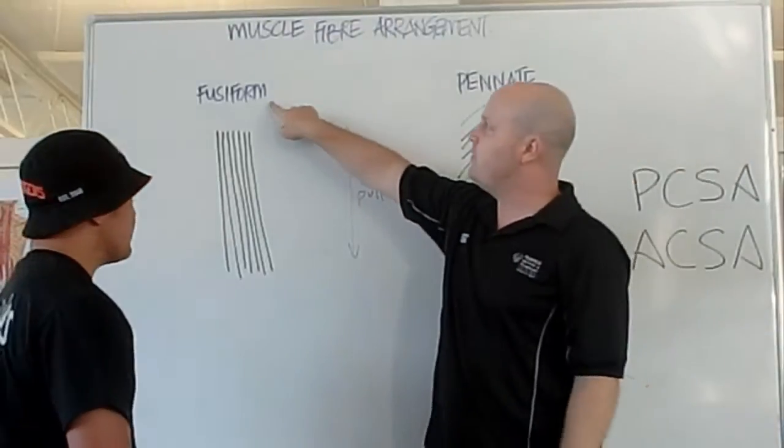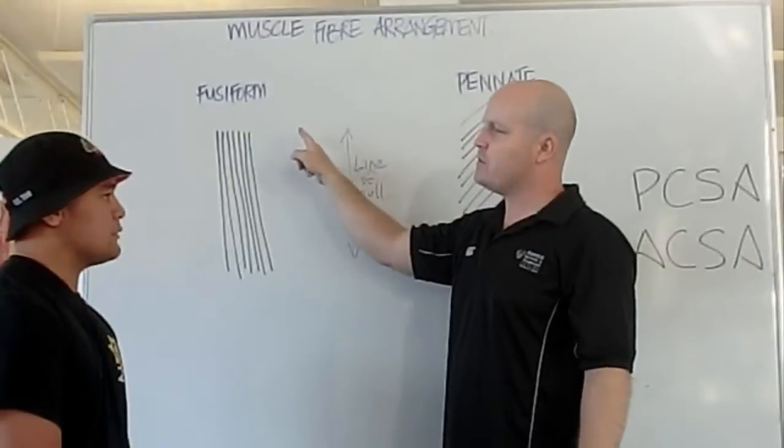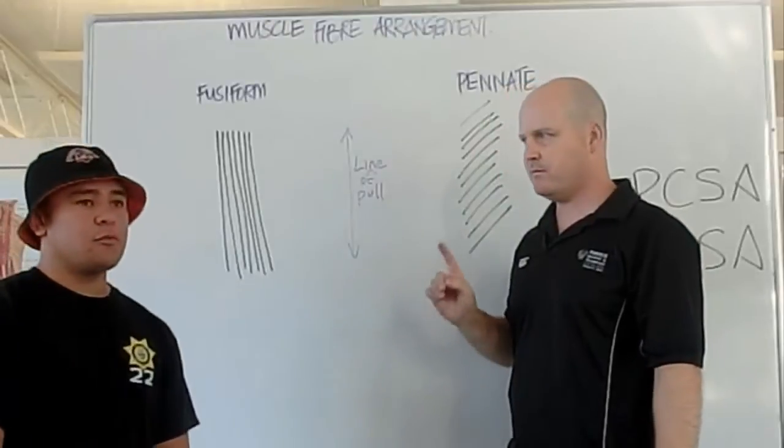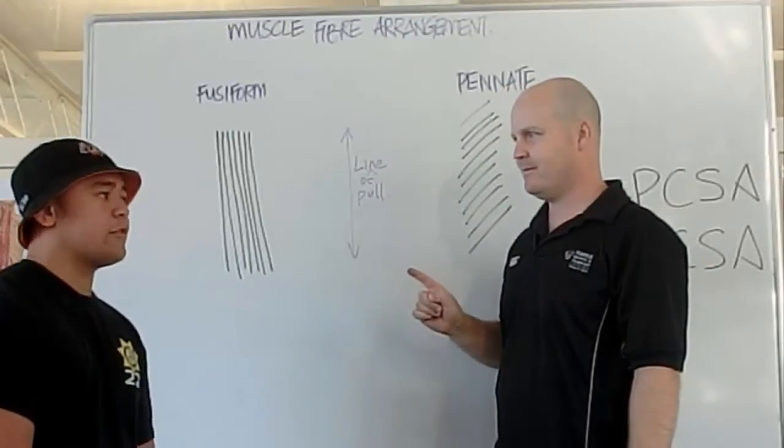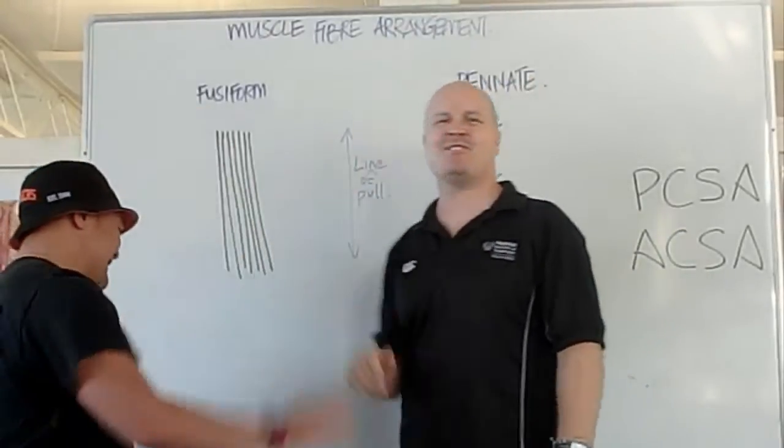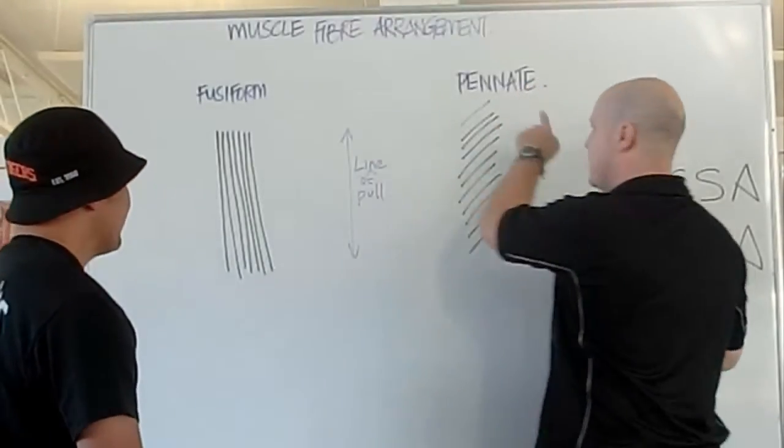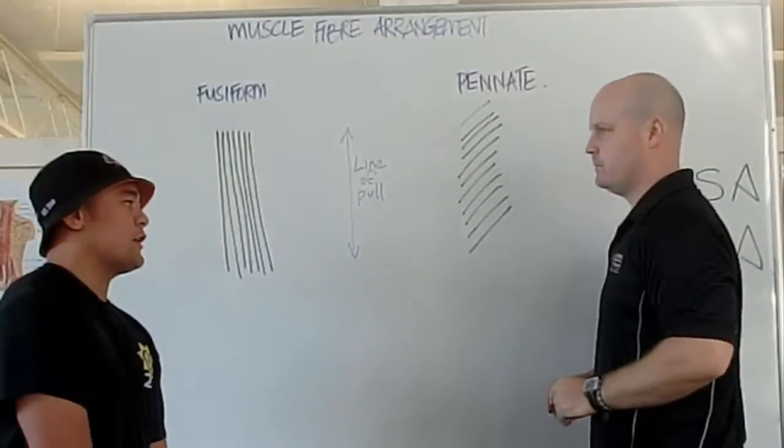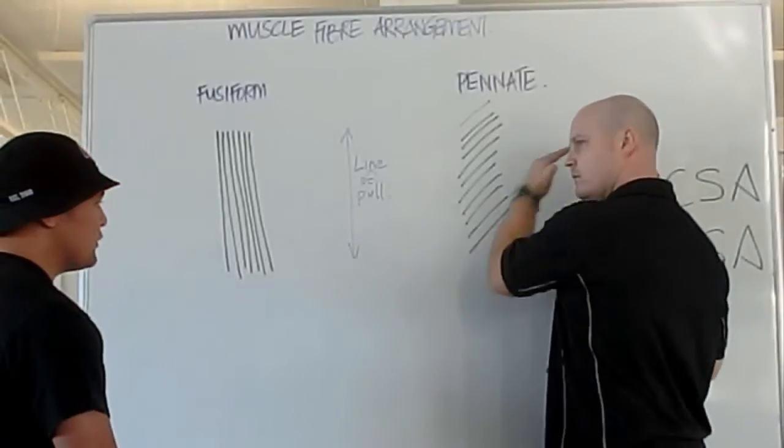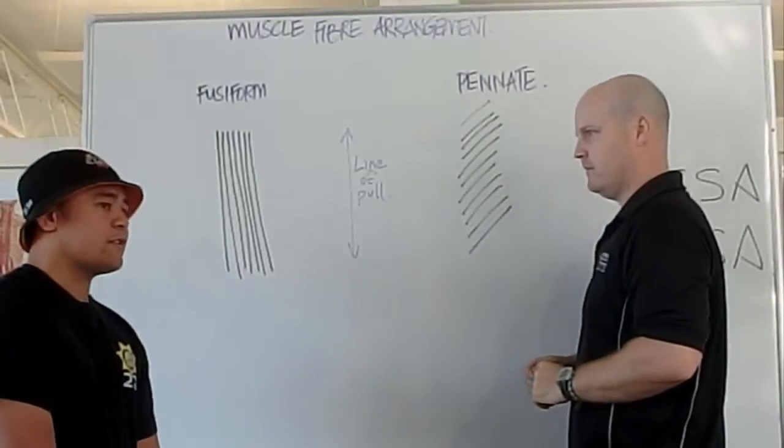With a fusiform muscle, the muscle fibres run parallel to the line of pull and run the whole length of the muscle. Then our pinnate muscle fibres run at an angle to the line of pull and do not run the full length of the muscle.